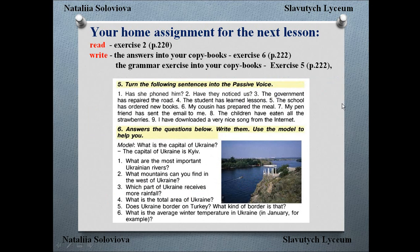I hope you got it, because your home assignment will be: first, to read exercise 2, which starts on page 220 and finishes on page 221. Then, to write answers to exercise number 6 on page 222 — answer the questions below, write them, and use the model to help you. All these questions are about Ukraine and you can find the answers in the text in exercise number 2 on page 220.